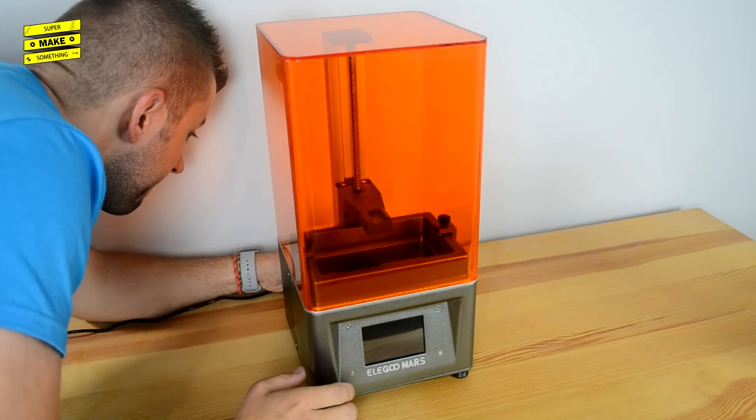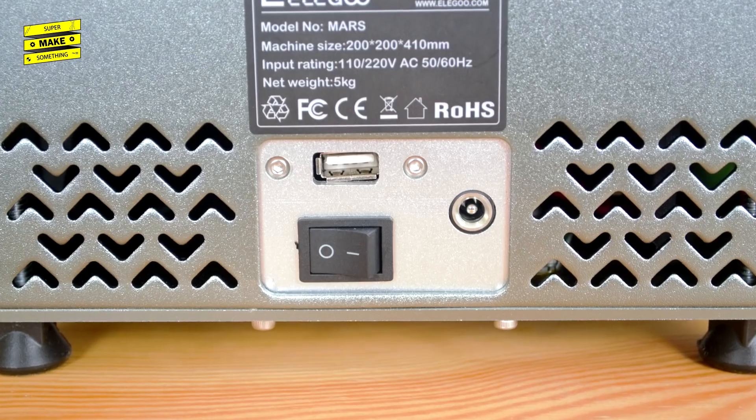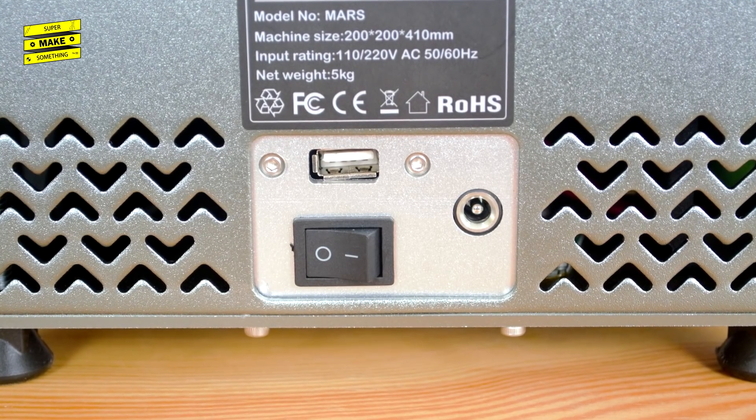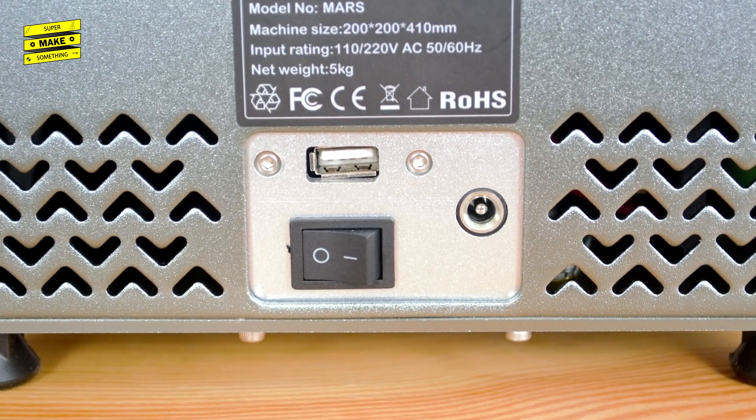With the unit unpacked, the first step was to plug in the power cord. The power port, power switch, and USB port for printing files from the USB thumb drive are all located on the back of the unit.